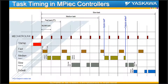Next in priority comes the fast task, which runs as soon as the Mechatrolink or motion engine task is done. Since it was set for a four-millisecond update, you can see every four milliseconds after the Mechatrolink task the fast task starts running. Next is the medium task, which starts as soon as the fast task is done, but gets interrupted by the fast task and Mechatrolink task if required. In the third scan, the medium task was interrupted by both.